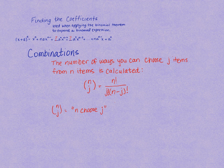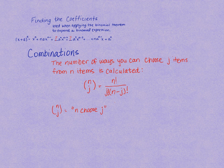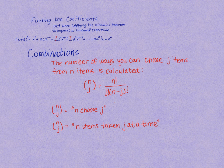We can think of this notation with the n over the j in a set of parentheses as 'n choose j' because we are choosing j items from n items. Another interpretation might be n items taken j at a time.